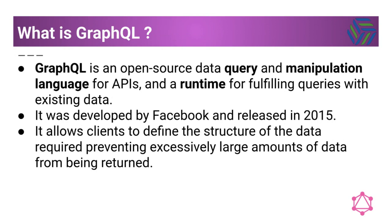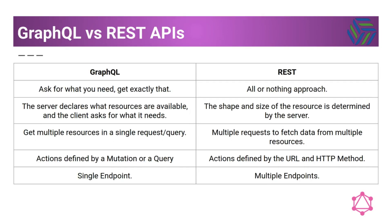Let's see a comparison between GraphQL and REST. In GraphQL you ask for what you need and you're going to get exactly that, while in REST there is an all-or-nothing approach. For example, let's say we have a user resource that includes user ID, first name, and last name. If you want to get a list that only includes the user ID, in GraphQL we are able to create a query and get exactly what we want. If we use REST, we need to fetch the entire resource including user ID, first name, and last name.